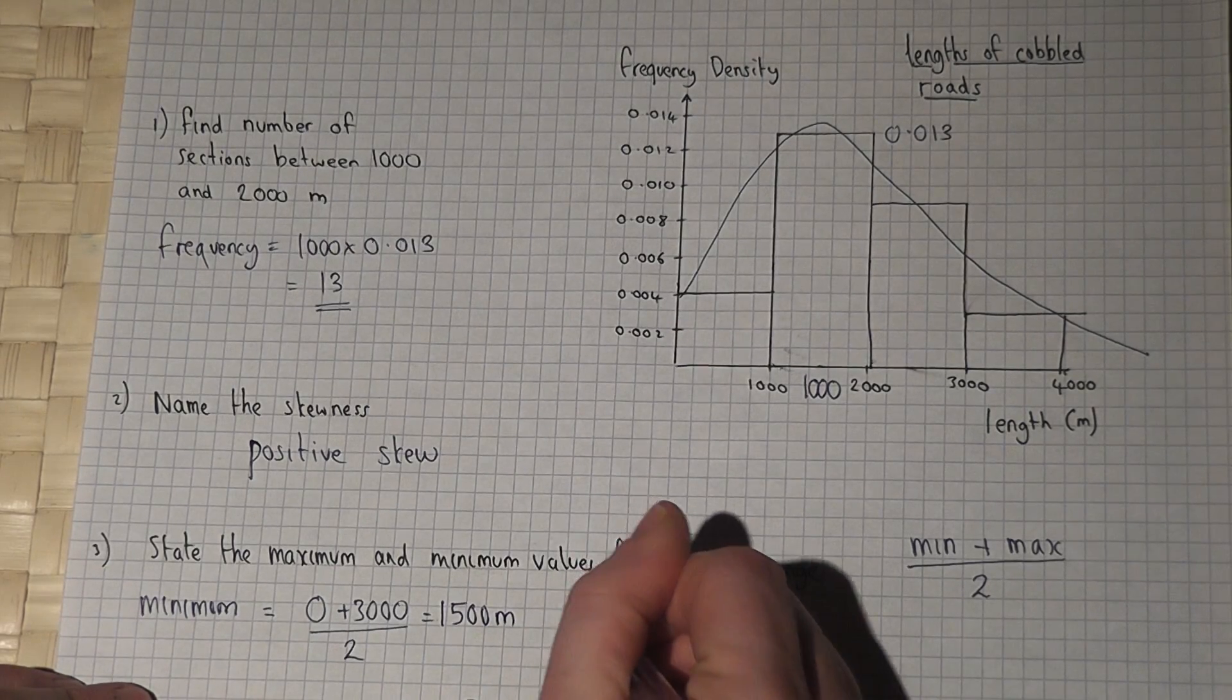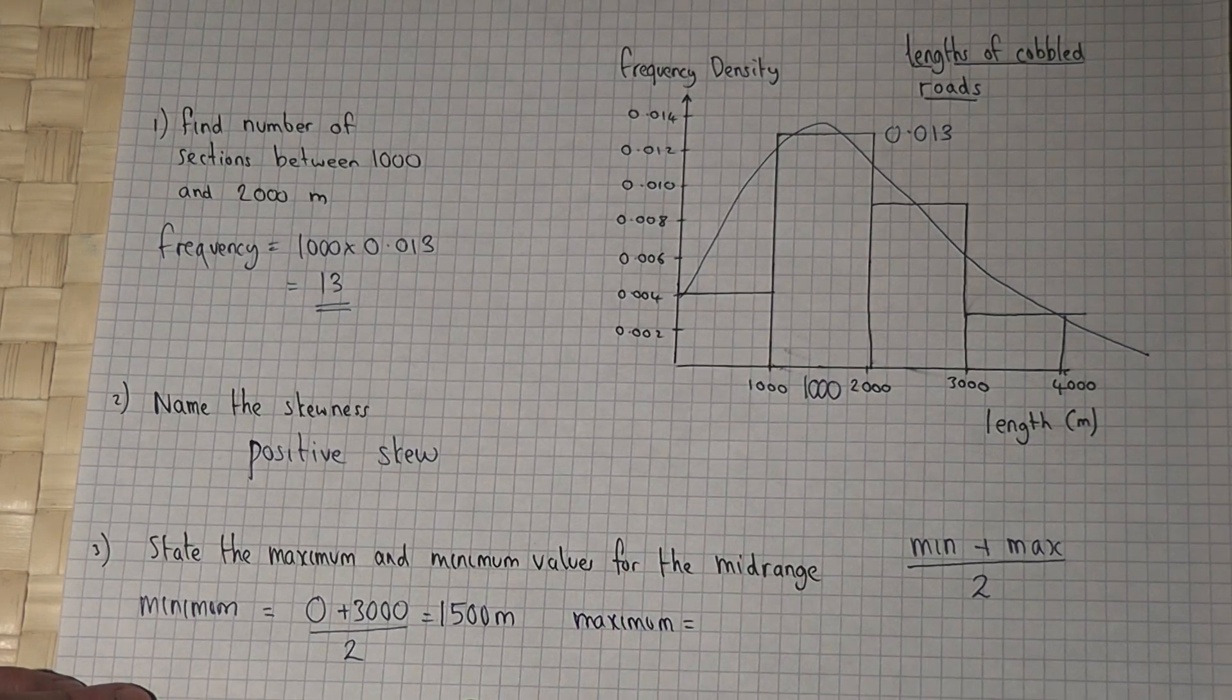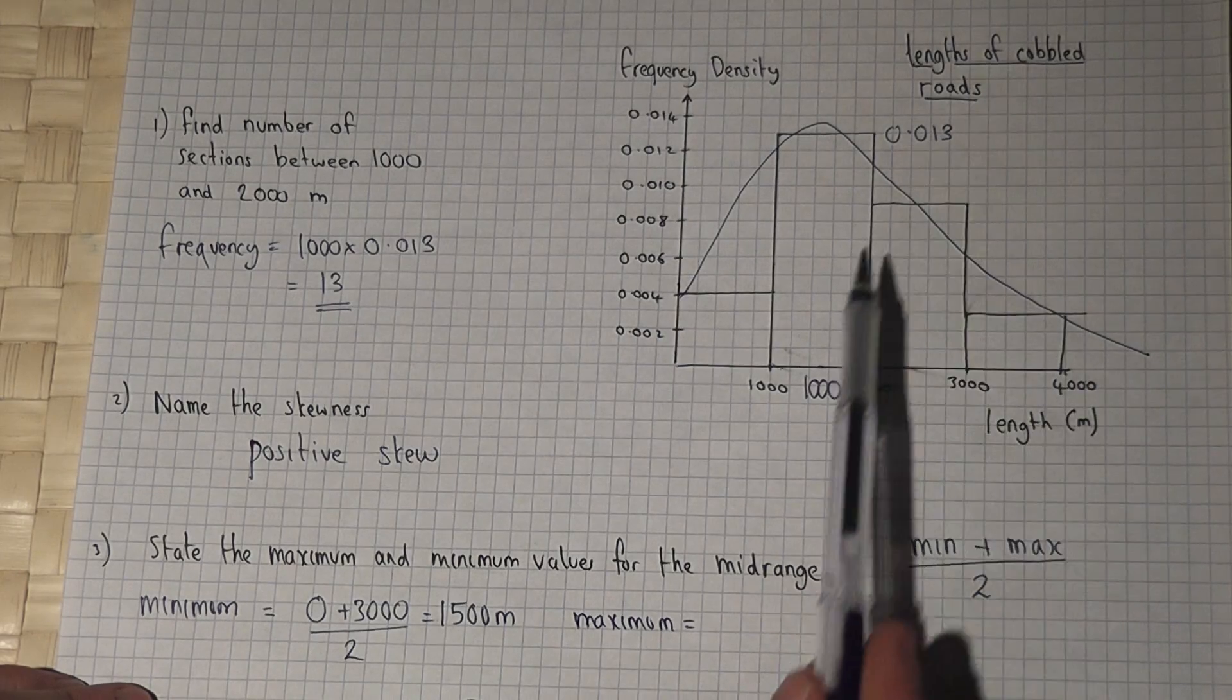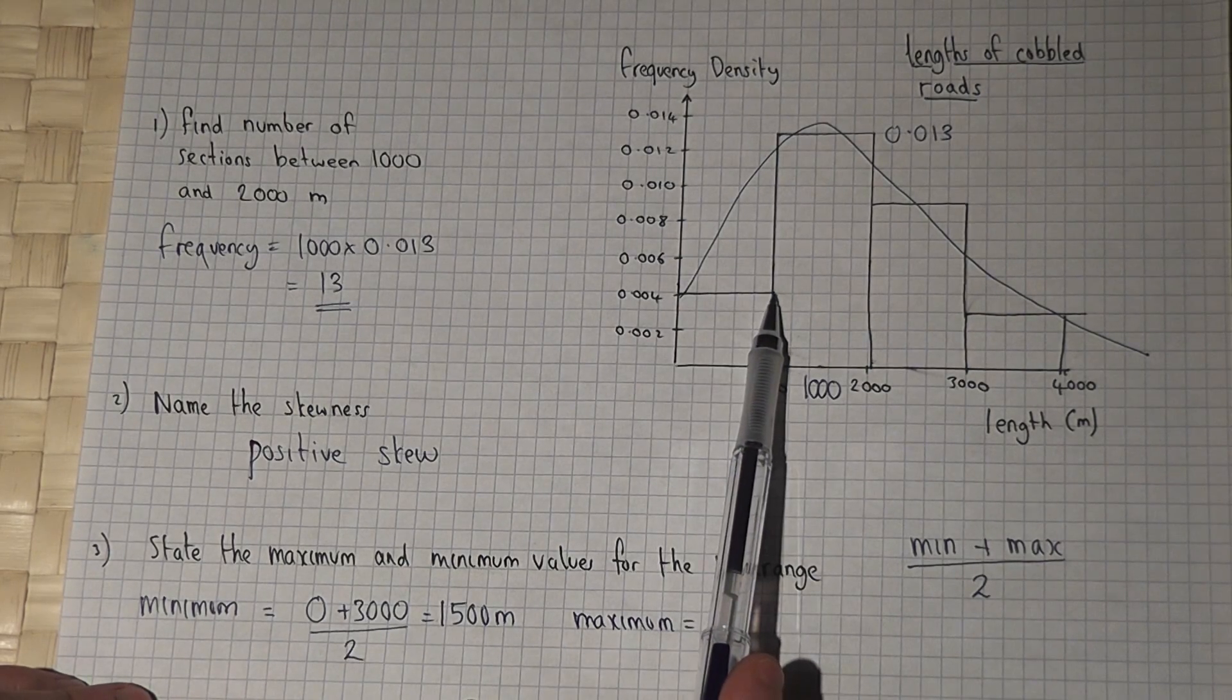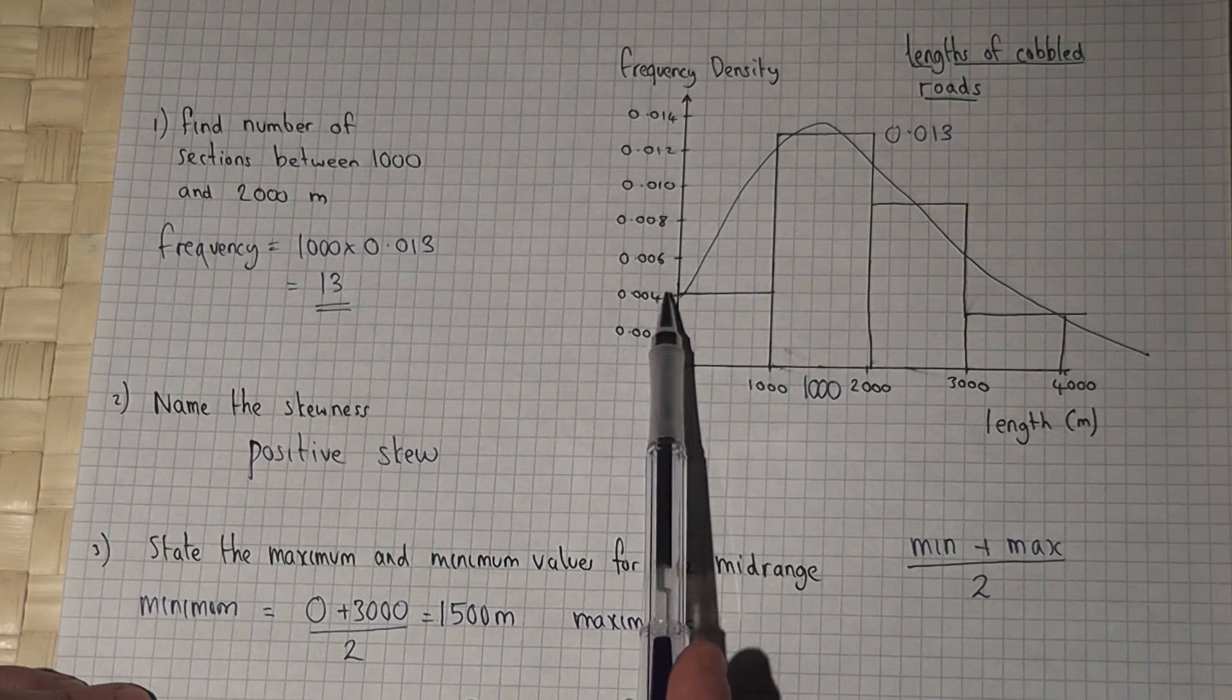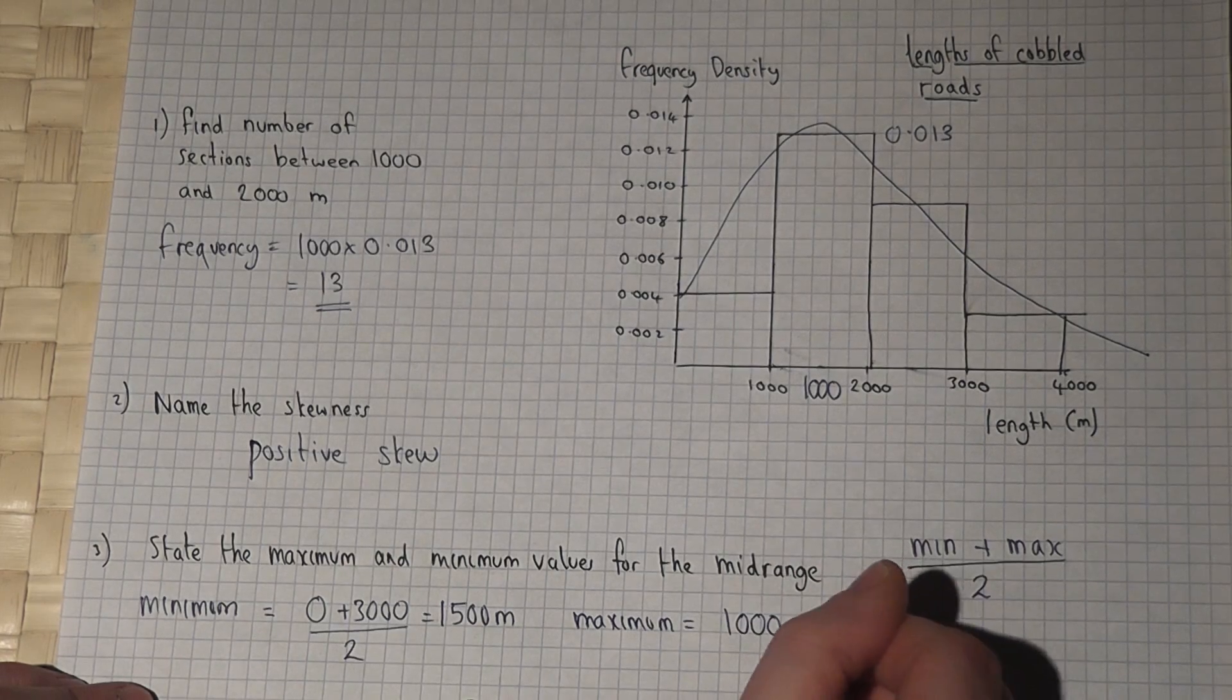For the maximum value for the mid-range: the lowest possible length of cobbled road isn't necessarily zero. It could actually be 1000 because this bar starts at zero and ends at 1000. So it's 1000 plus...